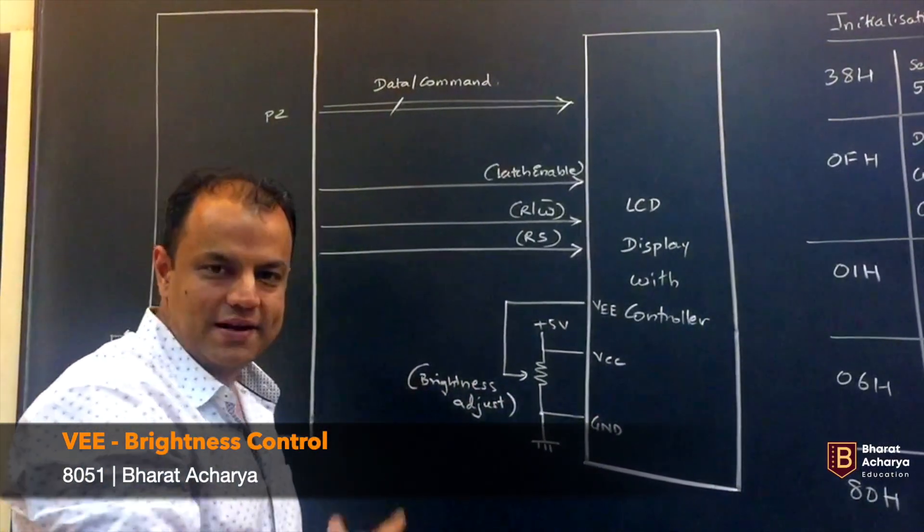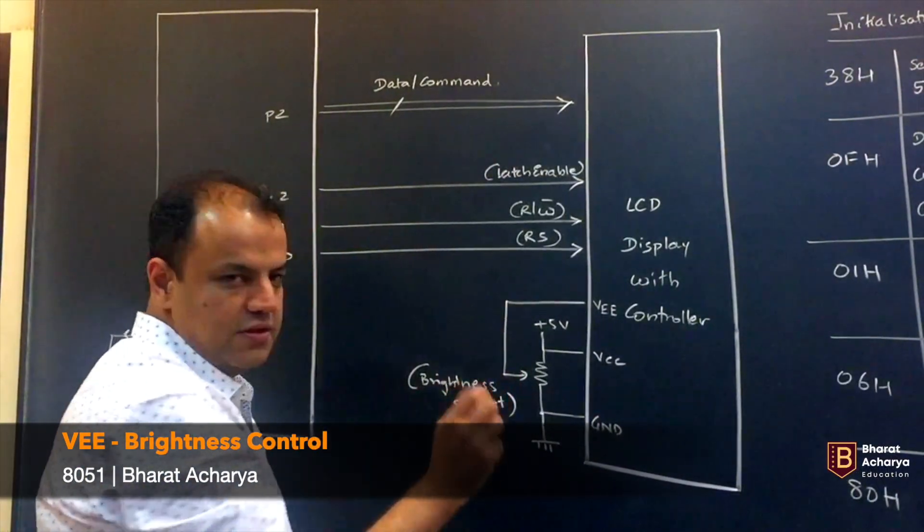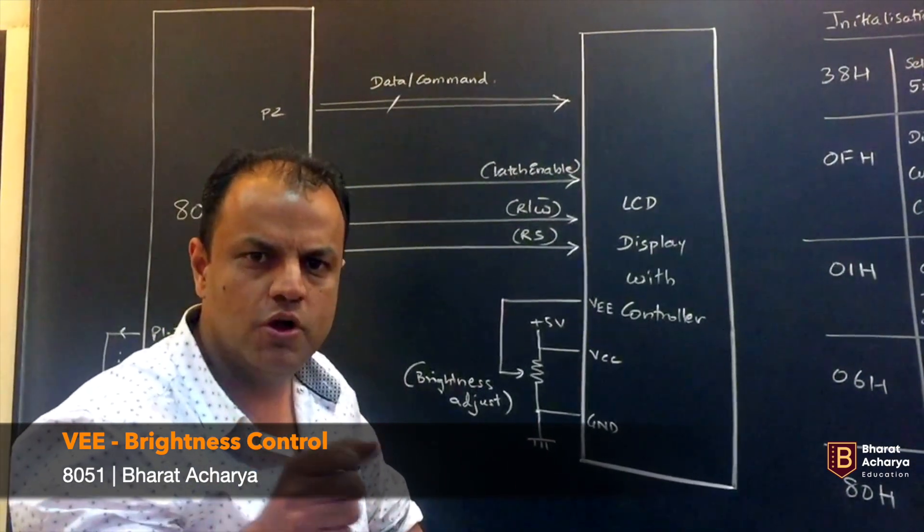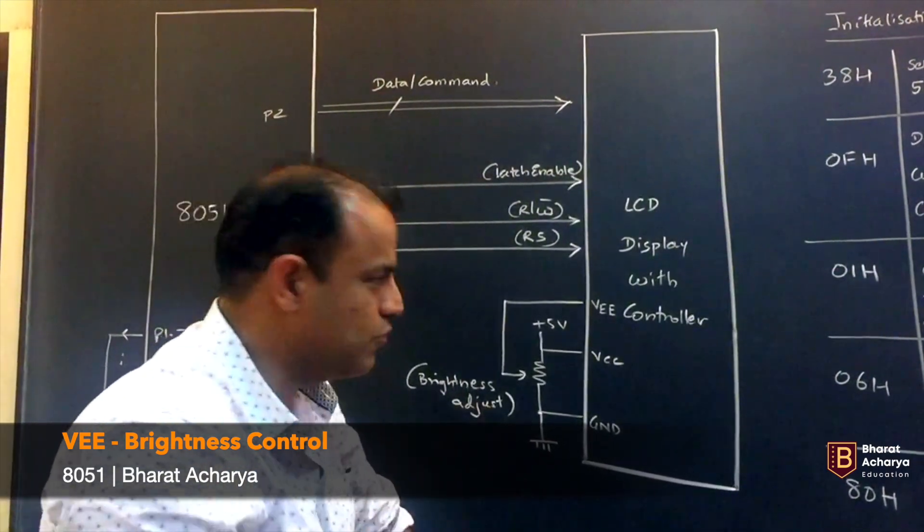VEE - this is your brightness control. Wherever you tap this, that will decide the brightness of the display. Like in most displays like your mobile phone, you can adjust the brightness. So that brightness control is over here.